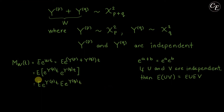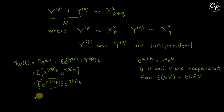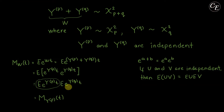Then treating these two terms as random variables and using this property, we can distribute the expectation for each term. So we have the expectation of e raised to Y_p t, times the expectation of e raised to Y_q t. This term is the moment generating function for Y_p, and similarly this is the moment generating function for Y_q.